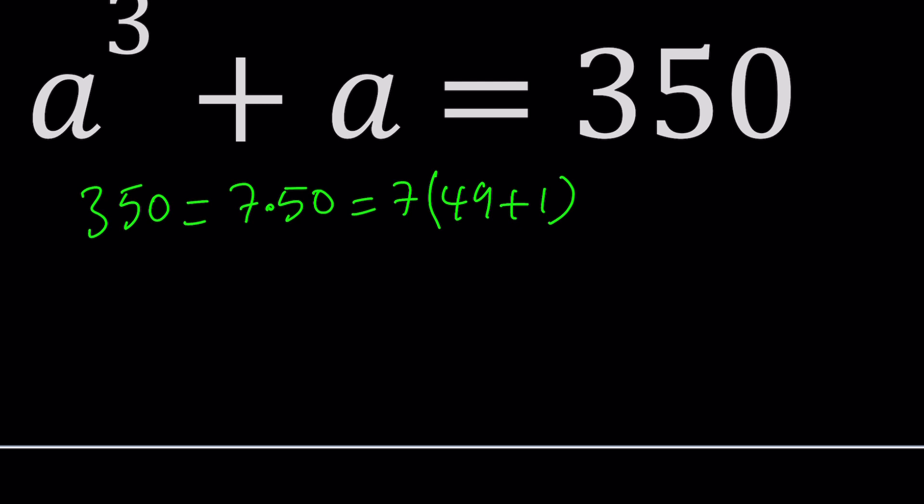We can now write 49 as 7², and then distribute the 7 over 7² + 1, just like variables. This becomes 7³ + 7. You're looking at the cube of a number plus the same number, and that's what we have on the left-hand side as well.